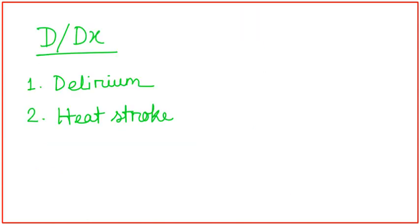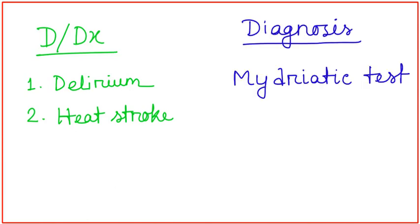The differential diagnosis of Dhatura poisoning are delirium and heat stroke. Now, how will you diagnose a patient of Dhatura poisoning?